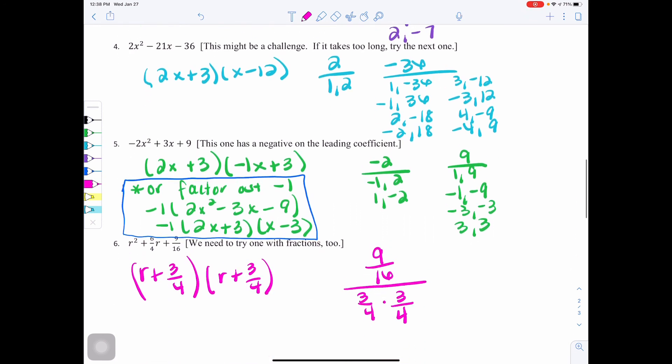In number 5, there's a couple ways you can do this. If you jump right into what we learned today, you would have 2x plus 3 times negative 1x plus 3. But there is another option. We have learned about GCF. So you could factor out a GCF of negative 1 first, which would give you 2x squared minus 3x minus 9, and then factor that trinomial into 2x plus 3 times x minus 3. So either of those answers would be correct.